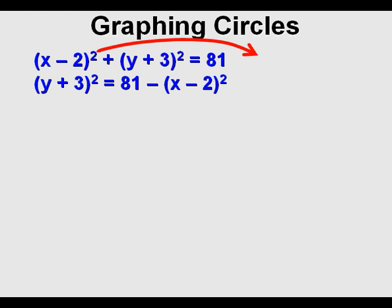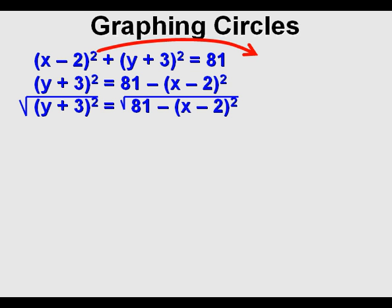And here we now have (y + 3)² isolated on the left side of the equation. Our next step is to take the square root of both sides of the equation. That leaves us with y + 3 equals plus and minus the square root of 81 - (x - 2)².